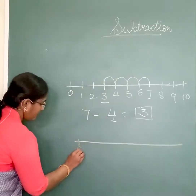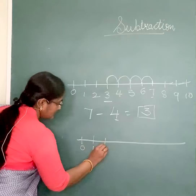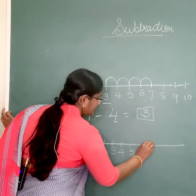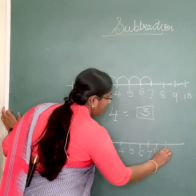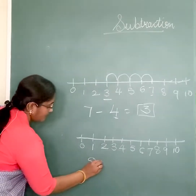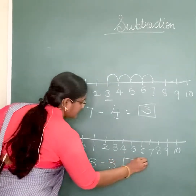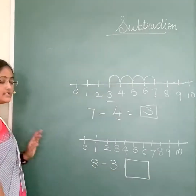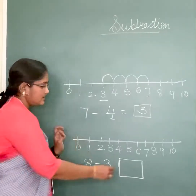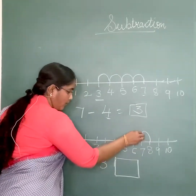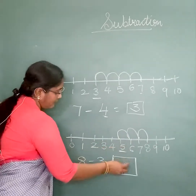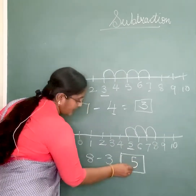On the number line: 1, 2, 3, 4, 5, 6, 7, 8, 9, and 10. Let's subtract: 8 minus 3. We have to start from 8 and take 3 steps back. Starting from 8: 1, 2, 3. So we come to the number 5, and here we write 5.